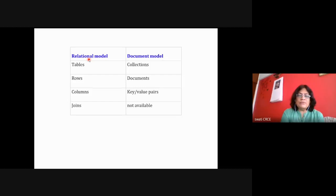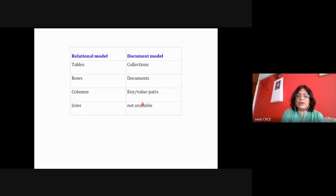In RDBMS, once you define the relationship between tables, joins are provided internally by the model. But in document store, such joint queries are not available.